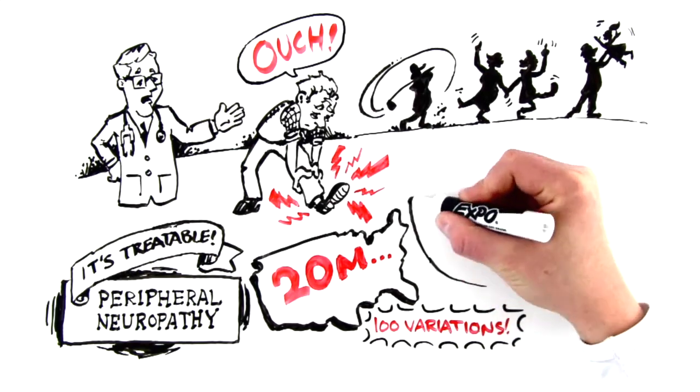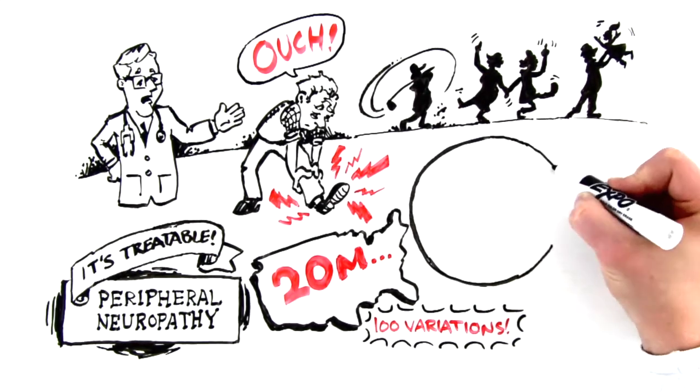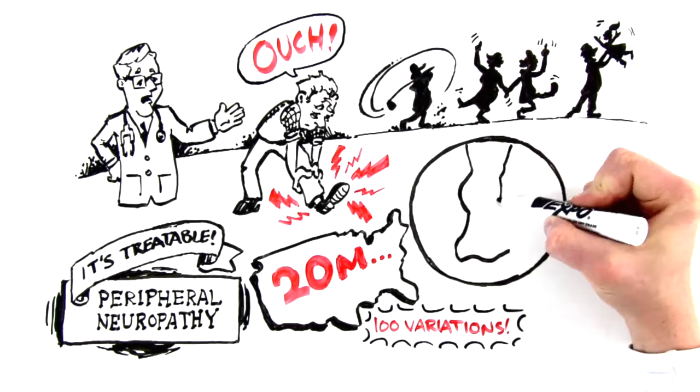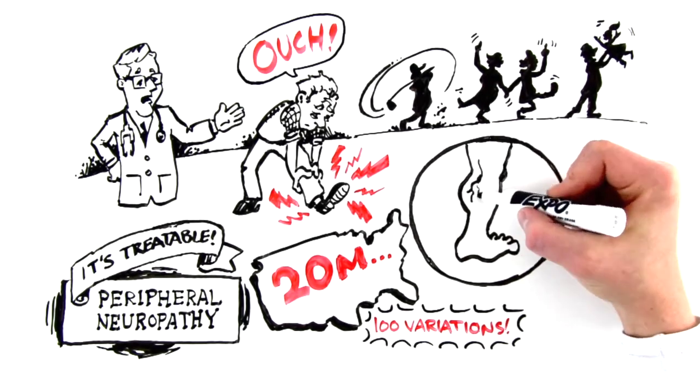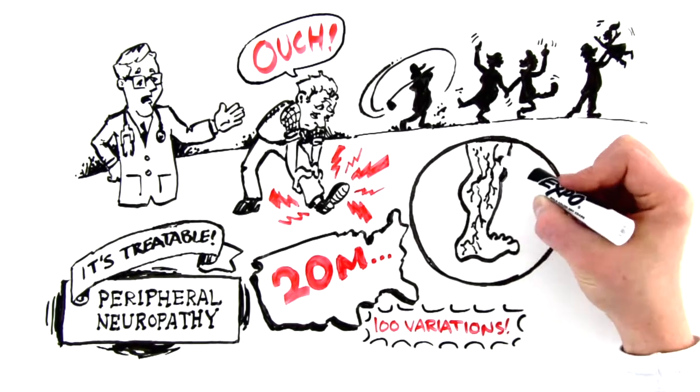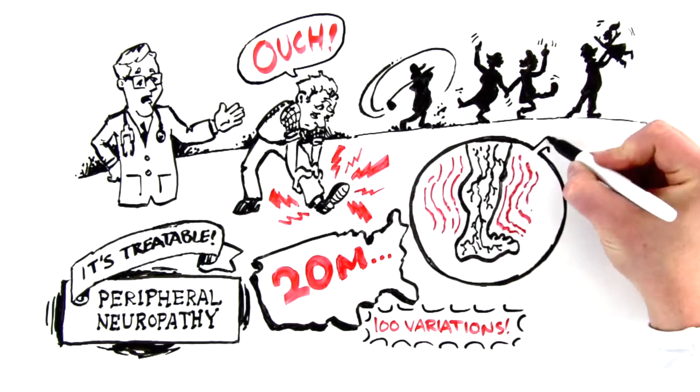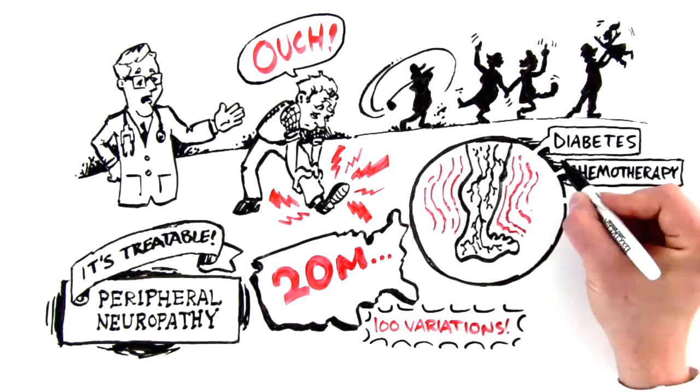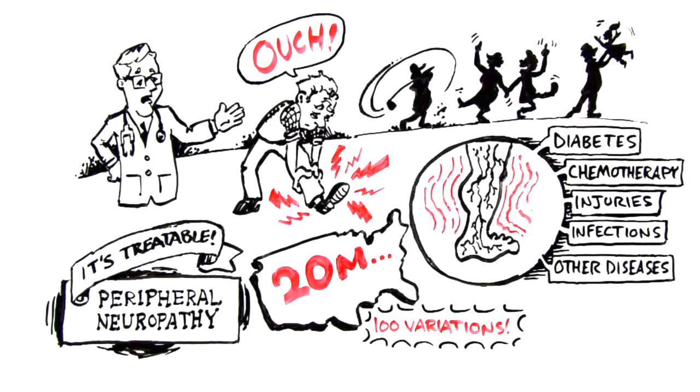You're probably wondering how it works. Peripheral neuropathy happens when the microscopic nerves and blood supply to your extremities, you know, your legs and feet, become damaged, usually resulting from diabetes, chemotherapy, injuries, infections, and other diseases.